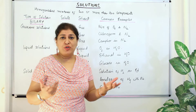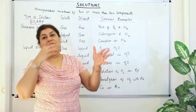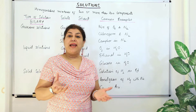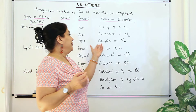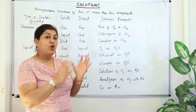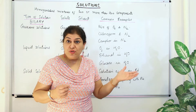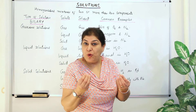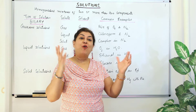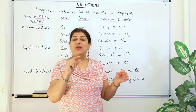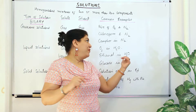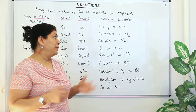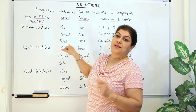The third type of gaseous solution is solid in gas — where a solid is dispersed in a gaseous solvent. For example, camphor in nitrogen. Naphthalene mothballs also directly convert into vapour form and disperse as solid particles in air, so naphthalene in air is another example of a solid-in-gas solution.